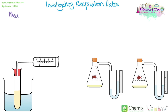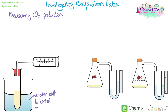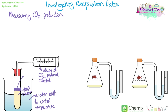Investigating respiration rates. One way is by measuring carbon dioxide production. You can take a solution of yeast, place it in a tube in a water bath — the water bath helps to control temperature — then collect the gas using a gas syringe to calculate the volume of carbon dioxide produced. You can make this an anaerobic respiration experiment by adding a layer of oil onto the top of the yeast to prevent any oxygen from reaching them.